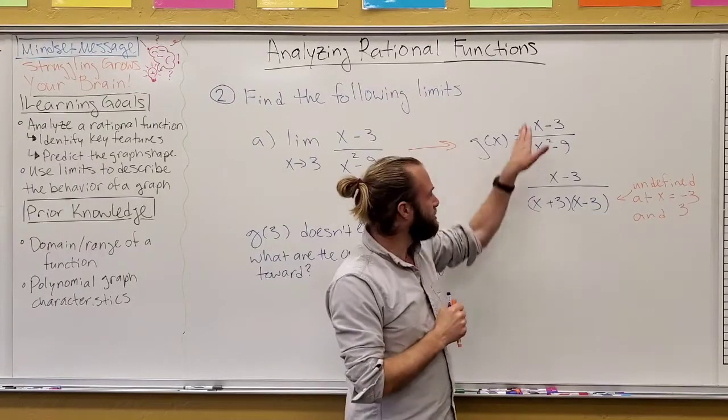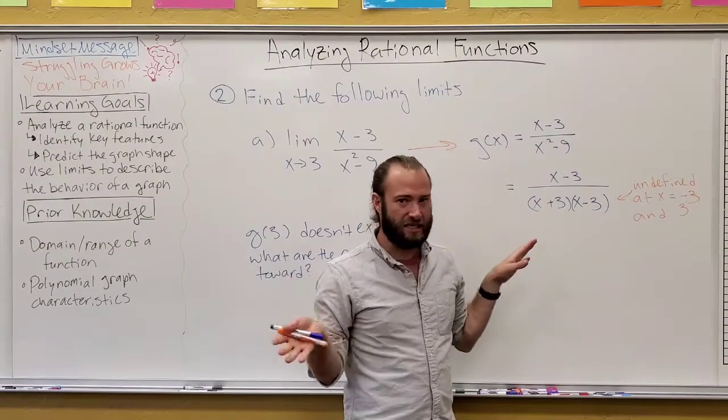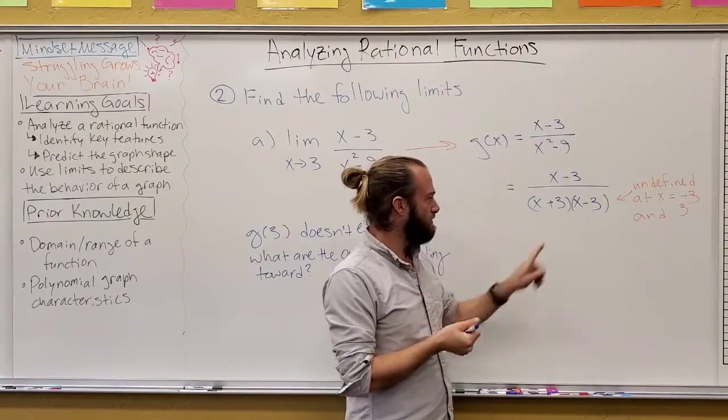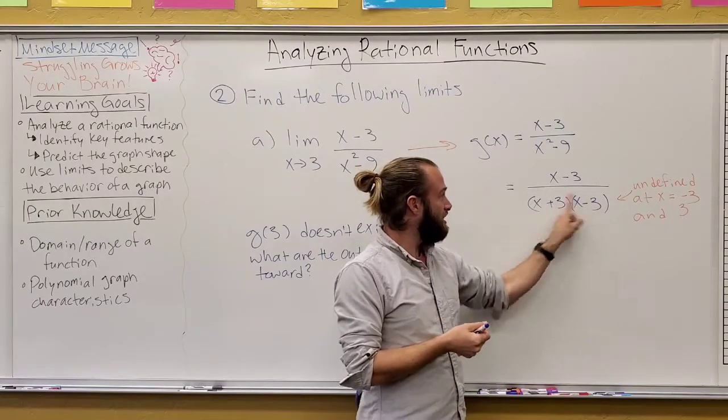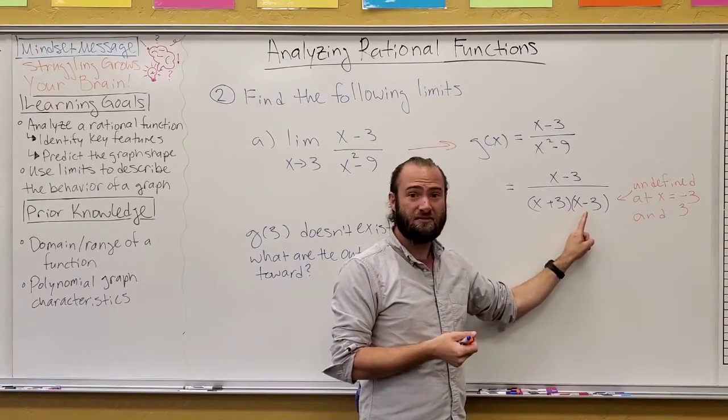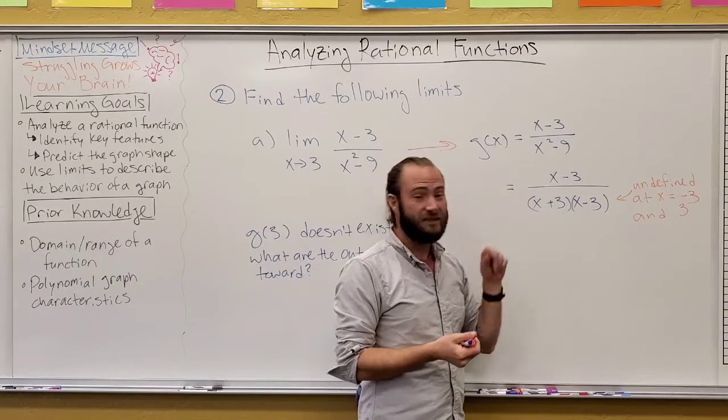So, we have to pause for a moment. G of x, this and this are exactly identical. We've just rewritten the algebra, but this makes it clear to see that negative three and positive three, they're both undefined in the function, right?